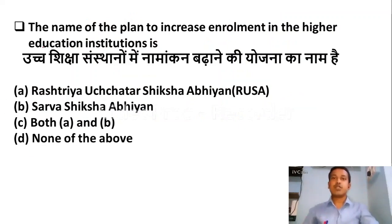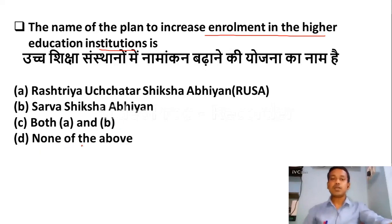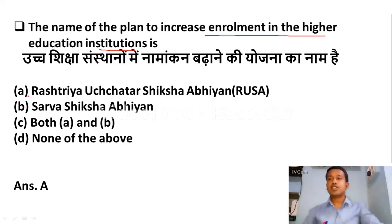Let us go to the questions. The question is: what is the name of the plan to increase enrollment in higher education institutions? Option A: Rashtriya Ucchatara Shiksha Abhiyan (RUSA). Option B: Sarva Shiksha Abhiyan. Option C: Both A and B. Option D: None of the above. The correct answer is Option A — RUSA, Rashtriya Ucchatara Shiksha Abhiyan.